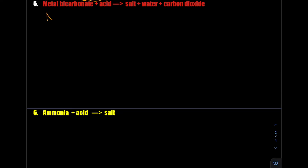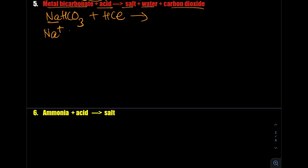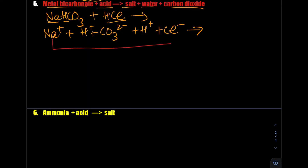The metal bicarbonate plus acid also gives salt, water, and carbon dioxide. Let's take sodium bicarbonate with HCl. Splitting into ions: Na⁺ plus H⁺ plus CO₃²⁻, and HCl gives H⁺ plus Cl⁻. There's an ion exchange: sodium bonds with Cl⁻ forming sodium chloride — table salt. The two hydrogens bond with one oxygen forming water, plus carbon dioxide.